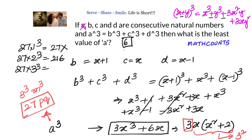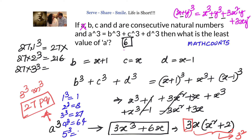Checking options: 27·1³ = 27 — we cannot get 27 as a sum of three cubes here. Next, 27·2³ = 216. Checking cubes: 1³=1, 2³=8, 3³=27, 4³=64, 5³=125. We find 3³ + 4³ = 91, and 91 + 125 = 216 — so 3³ + 4³ + 5³ = 6³. Therefore the least value of a equals 6.